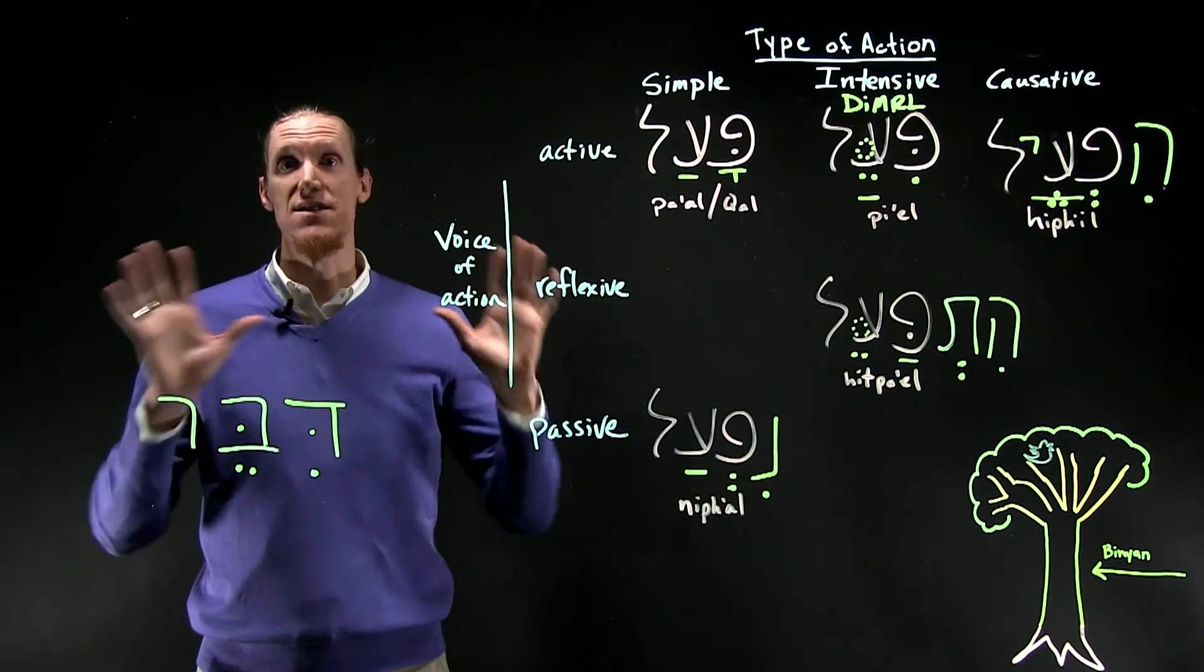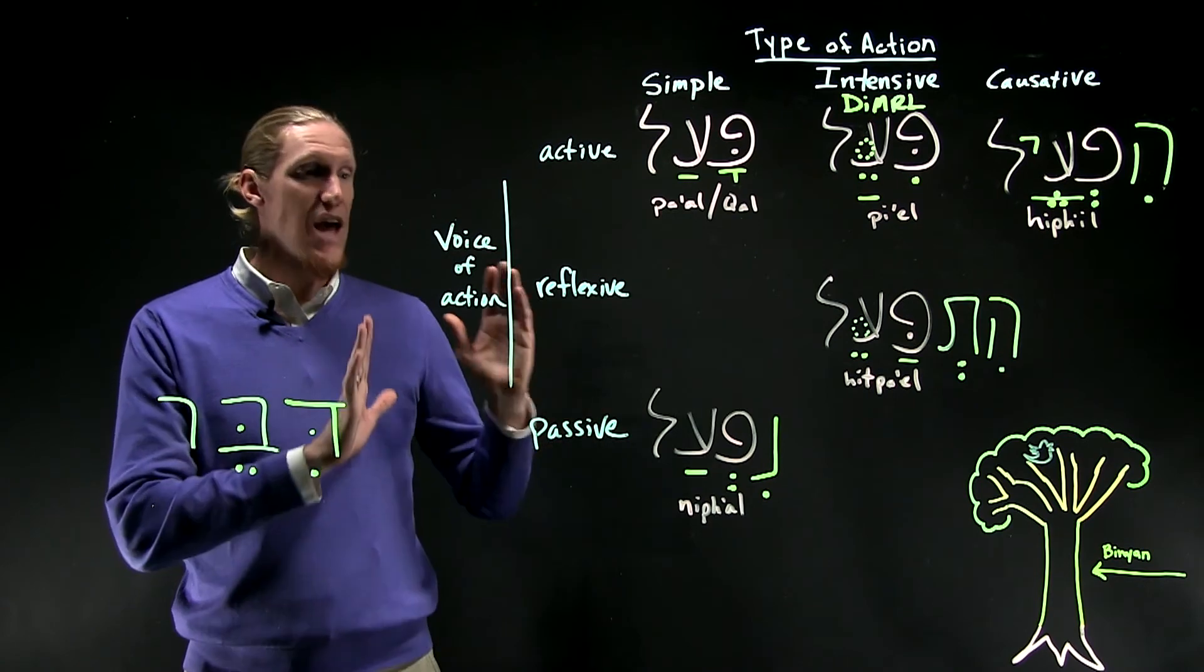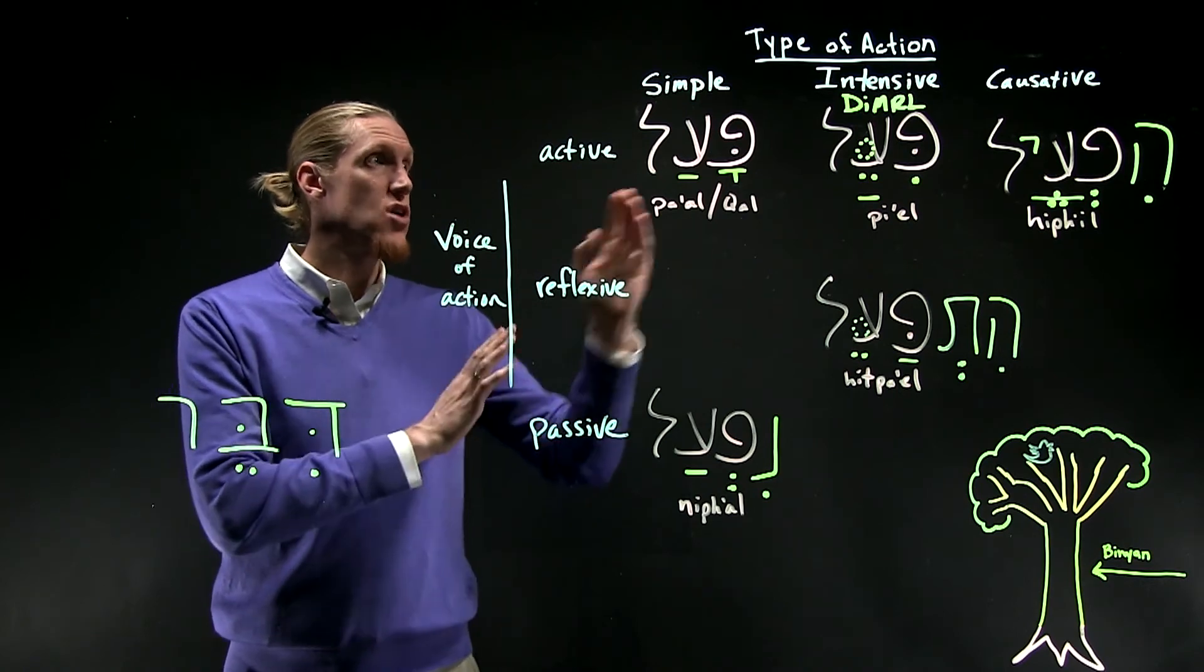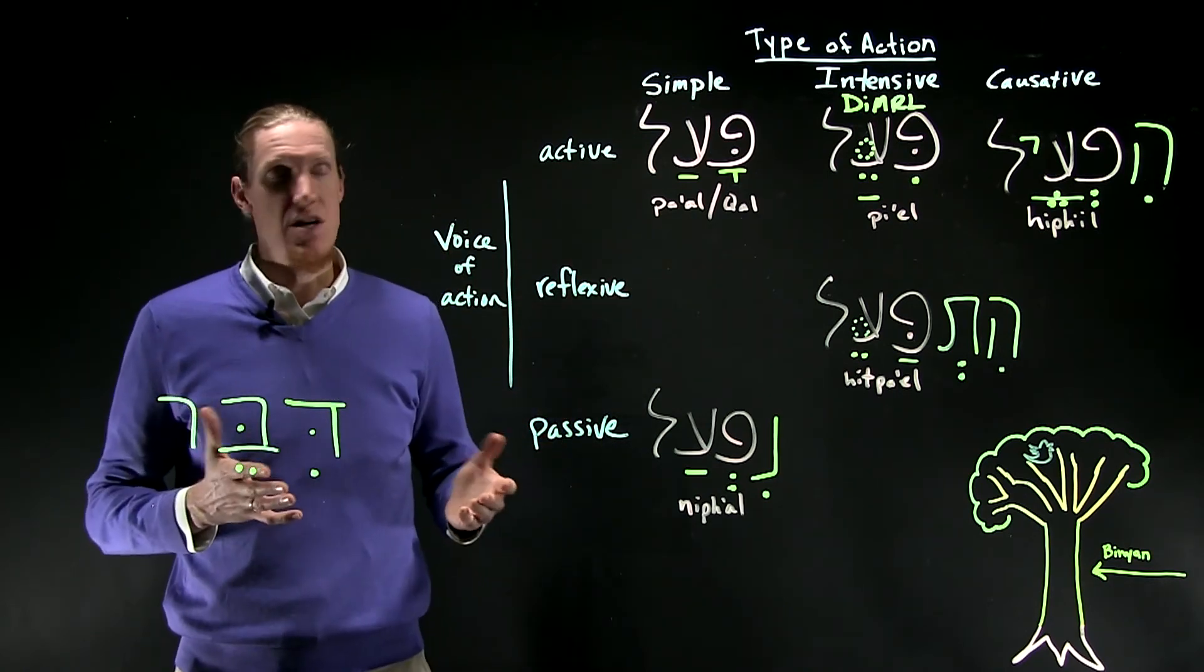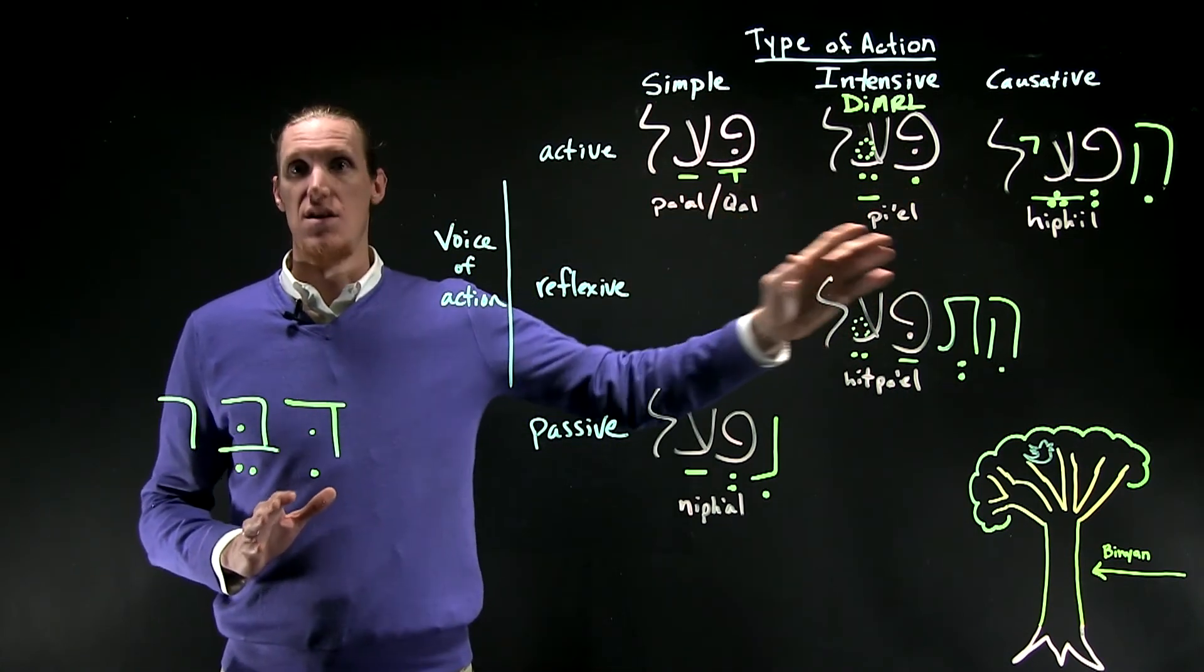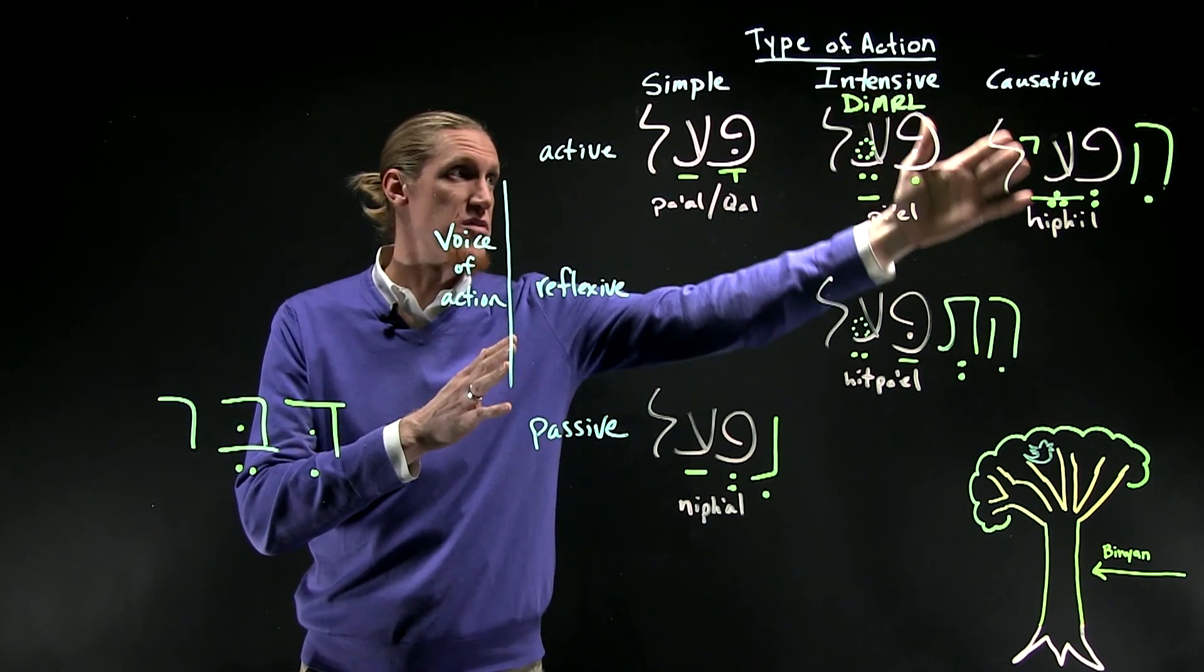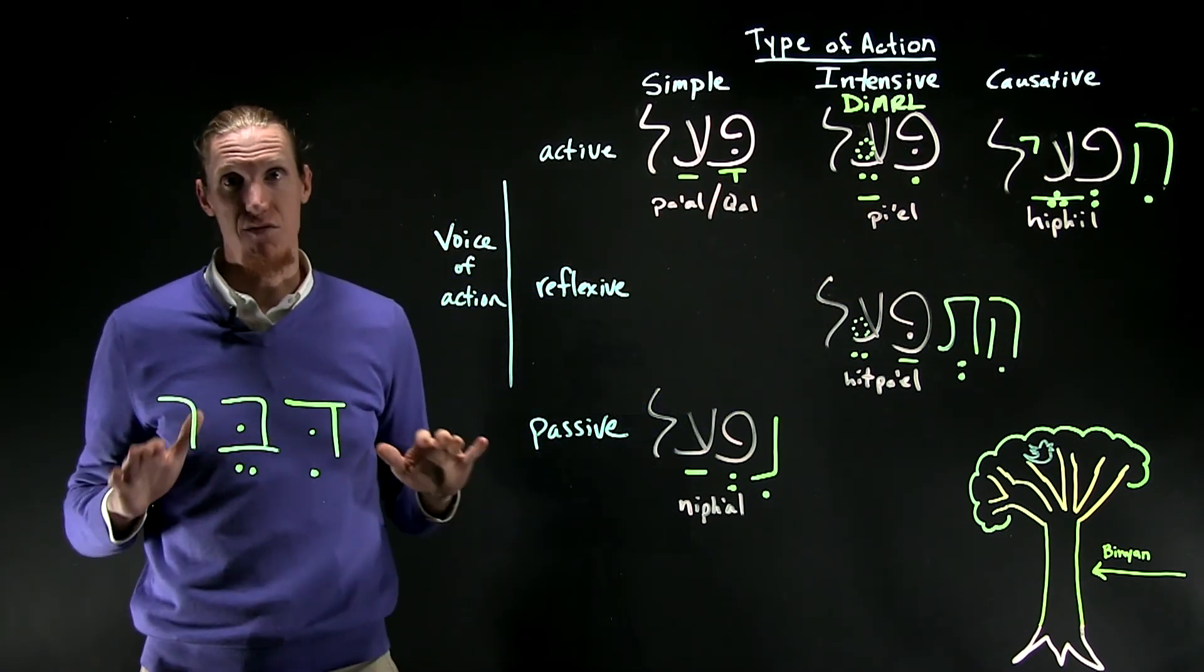One final comment about this chart. That this chart is a generalization of the meaning of the verb stems. Not every single nif'al stem will be passive. Not every single causative will be self-evidently causative. In general, each of the verb stems will communicate this kind of meaning, both a causative, let's say, type of action and active voice. But it's not 100% foolproof.